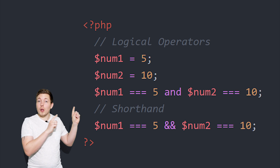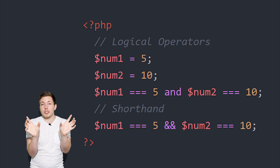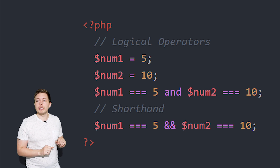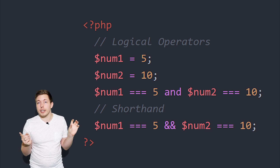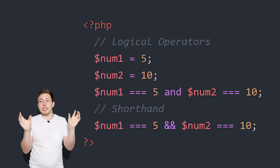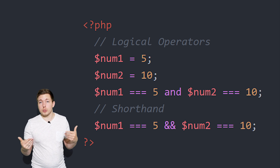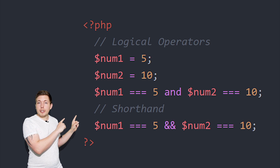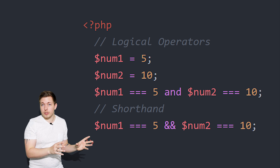Then we have logical operators. Logical operators allow you to combine different types of comparisons and check whether both of them are correct — whether they both return true, or one returns true, or both return false. In this first example, we take num1 and ask is num1 equal to 5, and then also check whether num2 is equal to 10. This will return true because both are equal to the numbers we set. We can also write this using two ampersand symbols instead of the word 'and' — that's what I'll use going forward. Both statements must be true for the entire statement to return true.